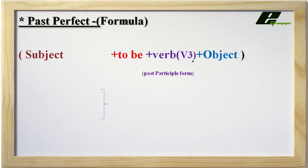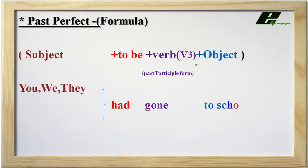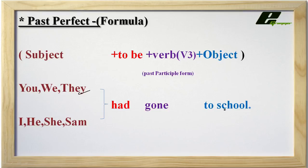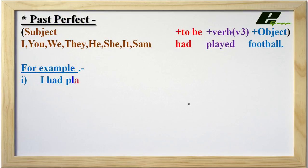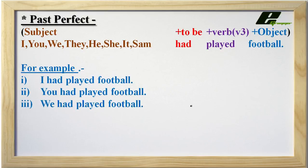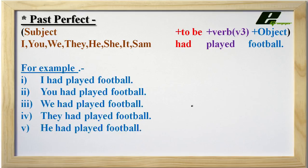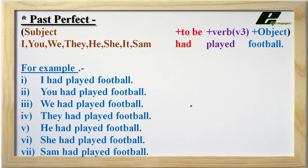Then comes object. For example: 'They had gone to school' — meaning you are telling about a past action which happened. See some examples: I had played football. You had played football. We had played football. They had played football. He had played football. She had played football. Sam had played football.